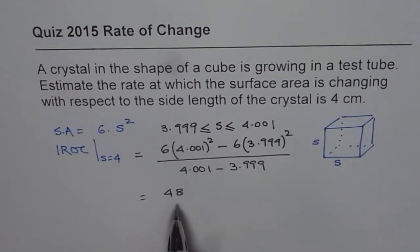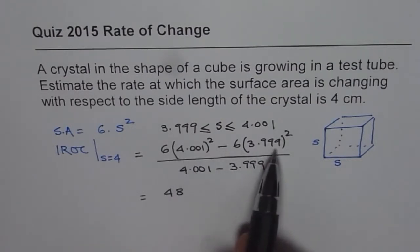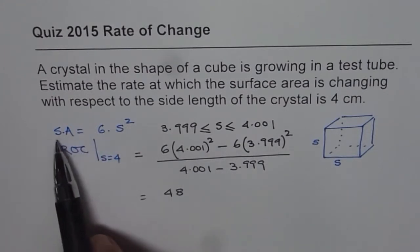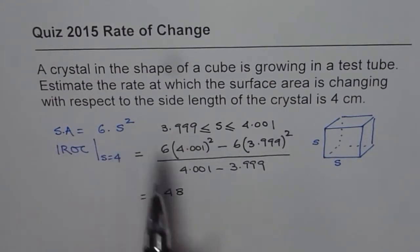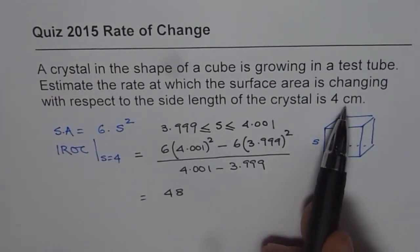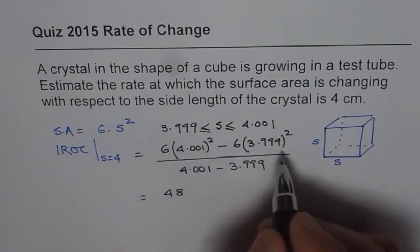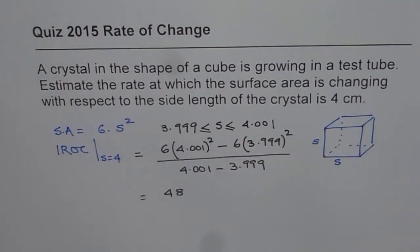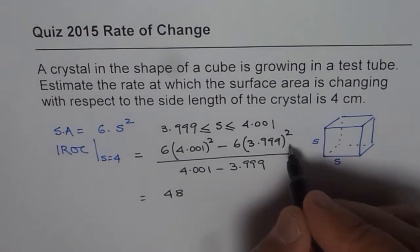So don't forget the unit. So what we had on the top is surface area. Do you understand? Surface area and it is given in centimeters. So in the numerator the unit is centimeter square.